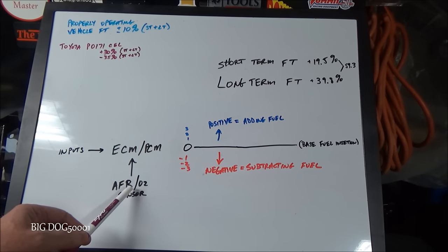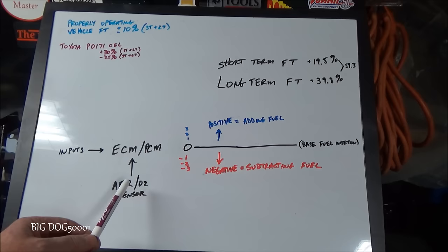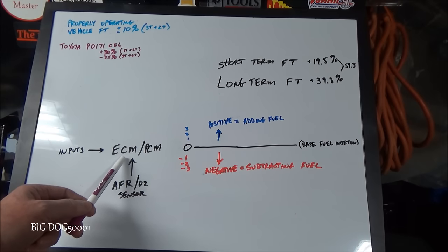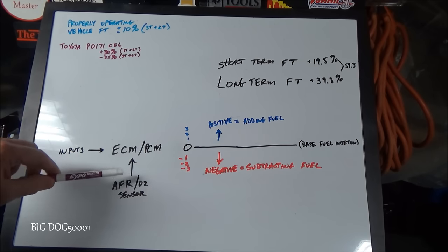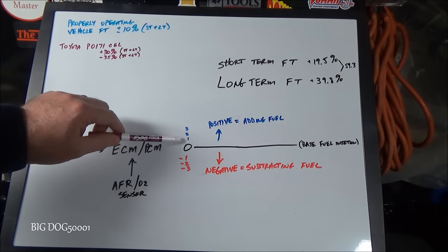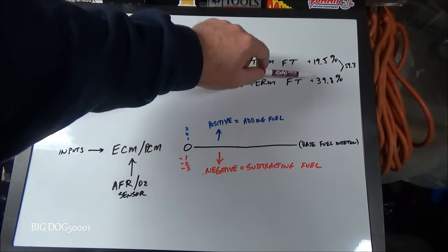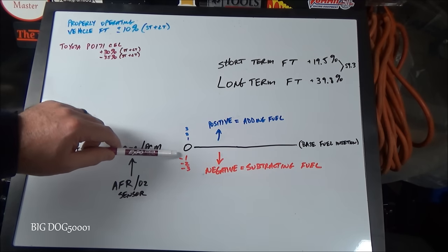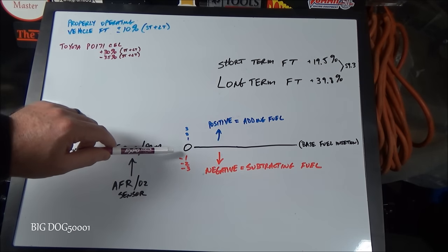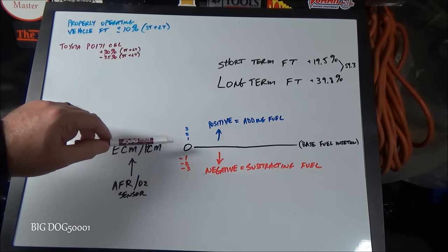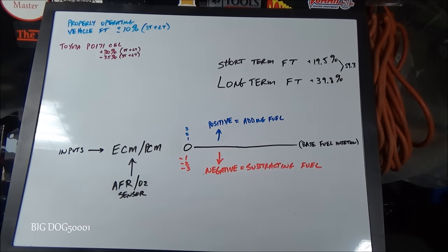In this vehicle we have an air-fuel ratio sensor sending an input to the computer telling it whether there's too much fuel or not enough. Positive fuel trim numbers mean the computer is adding fuel. If we saw negative fuel trim numbers, that would be the computer removing fuel from its baseline. That's fuel trim in a nutshell.